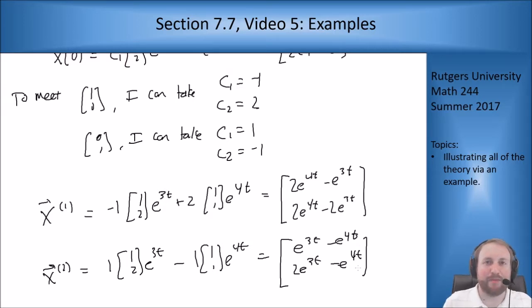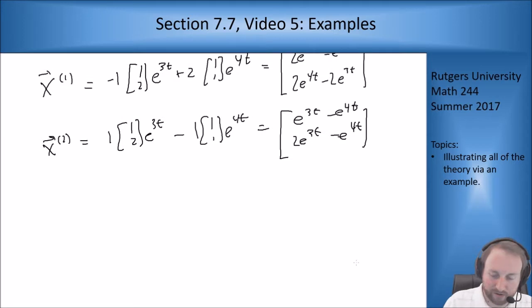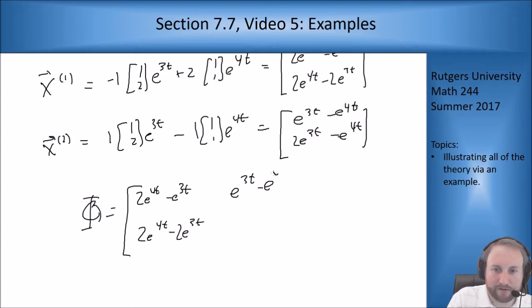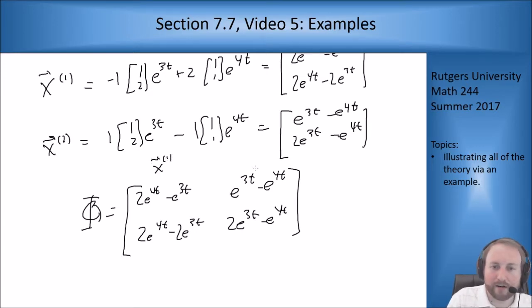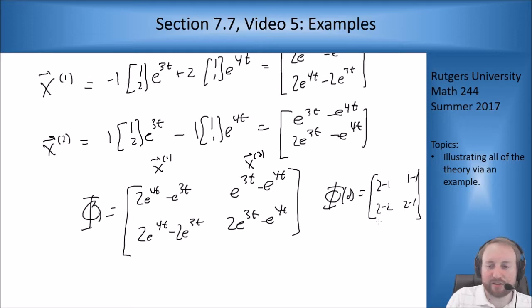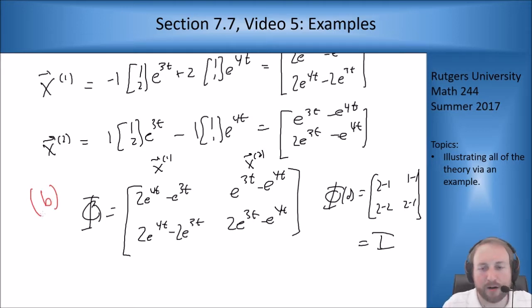Putting these two solutions into a matrix gives the special fundamental matrix φ(t) = [[2e^(4t)-e^(3t), e^(3t)-e^(4t)], [2e^(4t)-2e^(3t), 2e^(3t)-e^(4t)]]. To verify: plugging in t equals 0 gives [[2-1, 1-1],[2-2, 2-1]] = [[1,0],[0,1]], the identity matrix. This is the answer to part B.